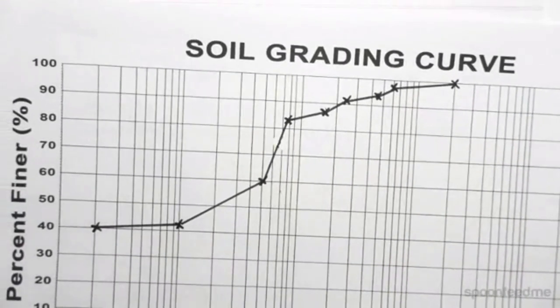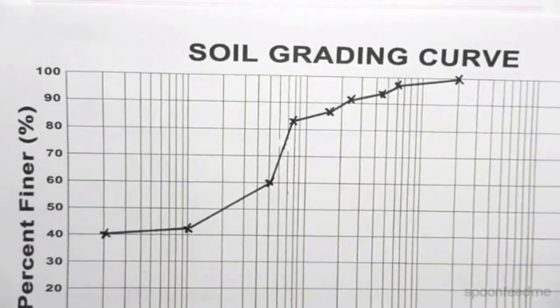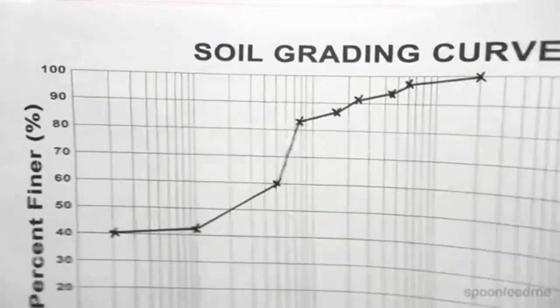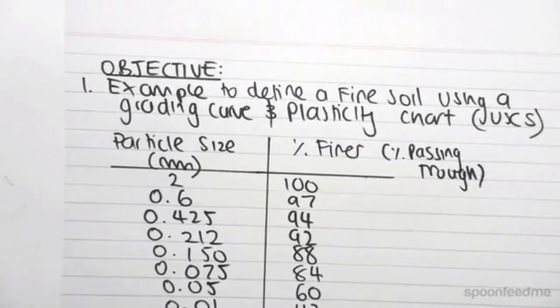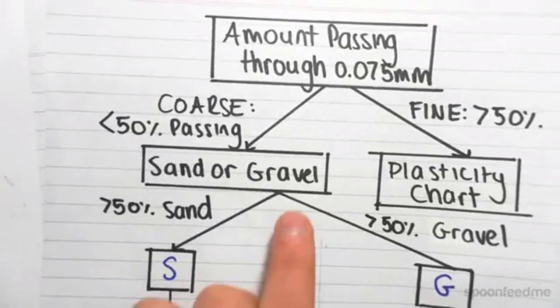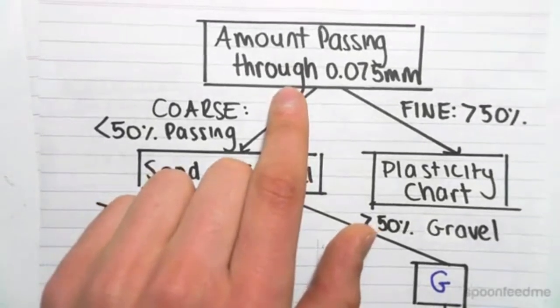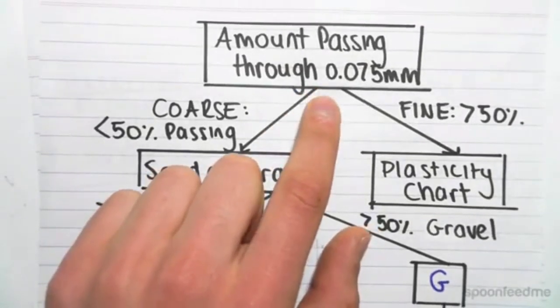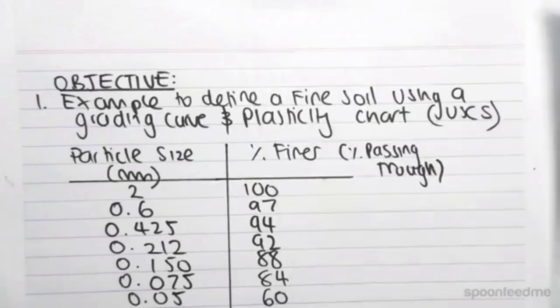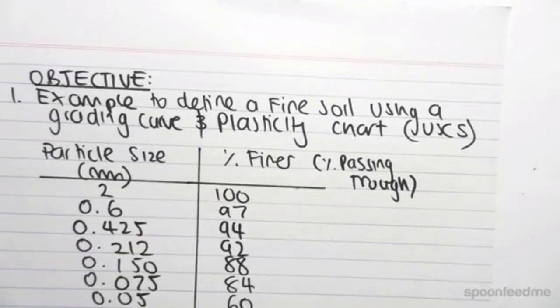And this now shows us a graphical distribution of the particle size and how they are distributed graphically. So if we now jump into the example, we're doing the unified soil classification system. The first thing on our flowchart was the amount passing through 0.075 millimeters. So that's the first thing we need to see. So 0.075 is a critical value.